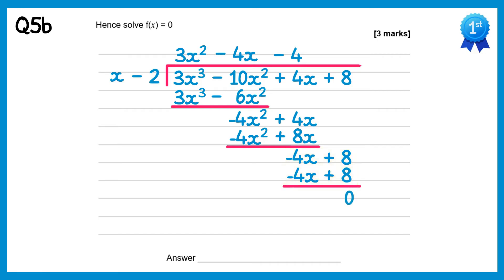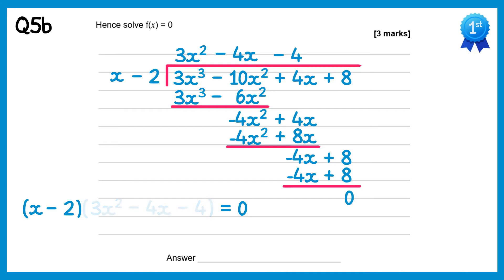So we can write f of x as the linear part x minus 2 times the quadratic part, which equals 0. This quadratic can also factorise further to 3x plus 2, x take away 2. So the first bracket gives x equals 2. The second bracket gives x equals negative 2 thirds. And the final bracket gives a repeated solution, x equals 2 again — so we don't need to write that down.